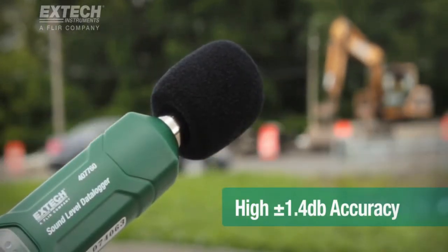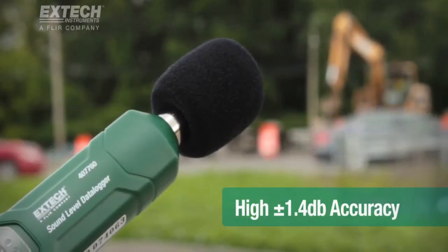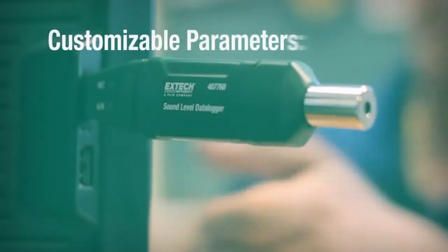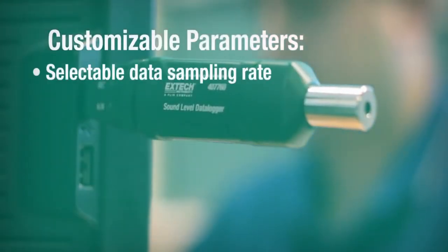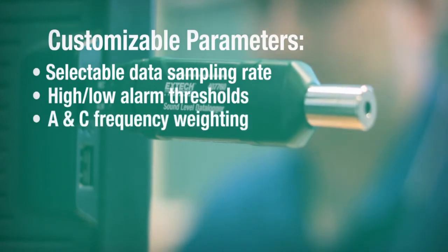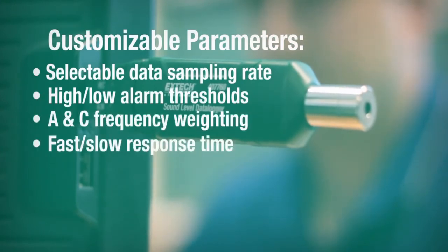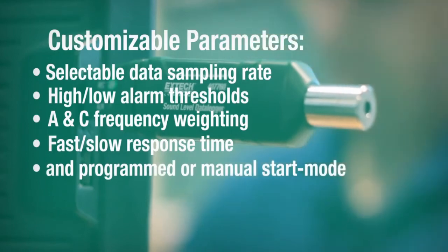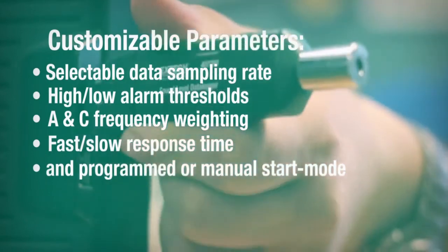The meter also features several parameters that are customizable via software, including selectable data sampling rate, high-low alarm thresholds, A and C frequency weighting, and fast-slow response time and programmed or manual start mode.